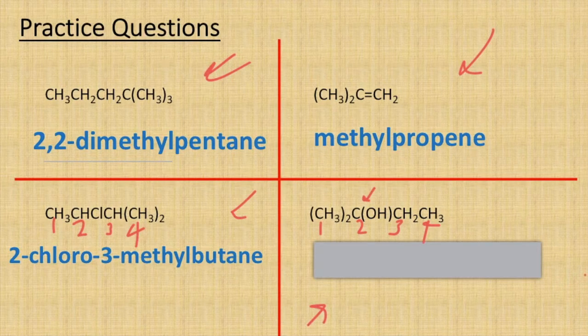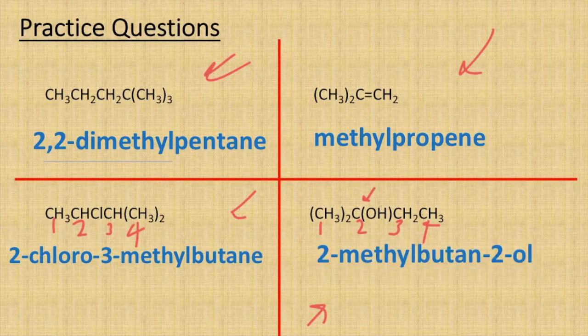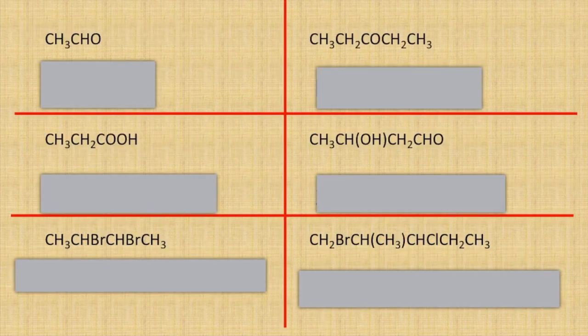You also have a methyl group on that second carbon as well, and therefore your name will be 2-methylbutan-2-ol. So on to page two then — the first one up in the top left corner is an aldehyde.